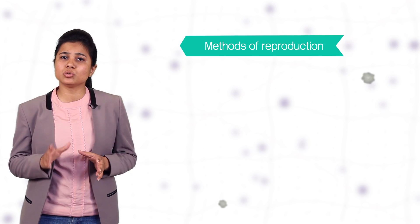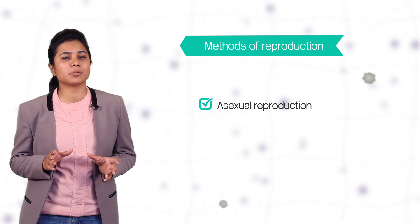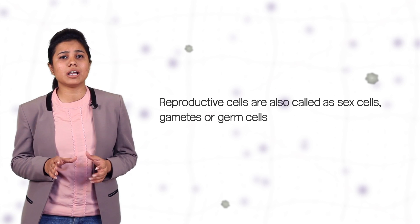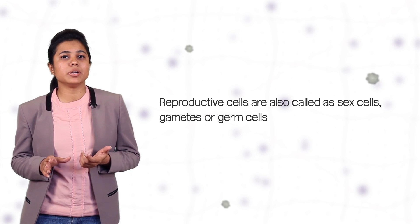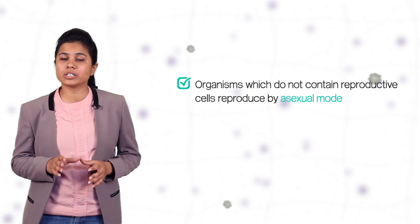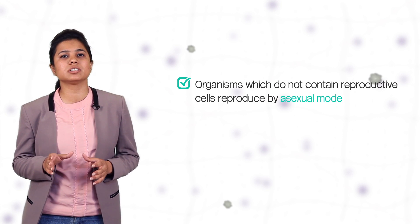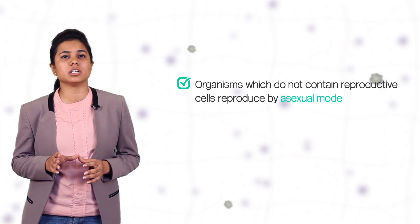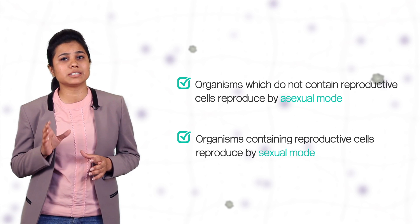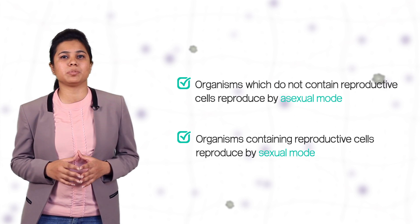There are mainly two methods of reproduction, asexual reproduction and sexual reproduction. The basis of categorization is that certain organisms contain reproductive cells also called as sex cells, gametes or germ cells. The organisms which do not contain these reproductive cells reproduce by asexual mode of reproduction and the organisms which contain these reproductive cells, or the sex cells reproduce by sexual mode of reproduction.